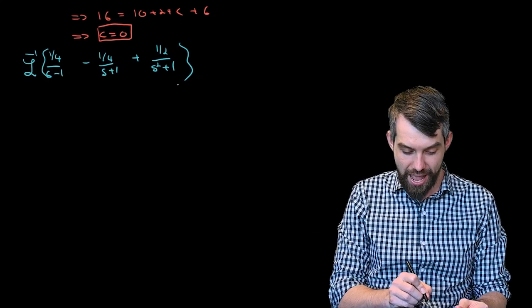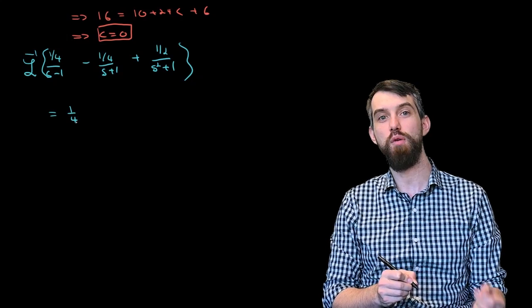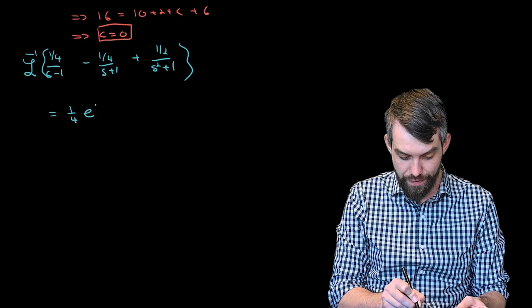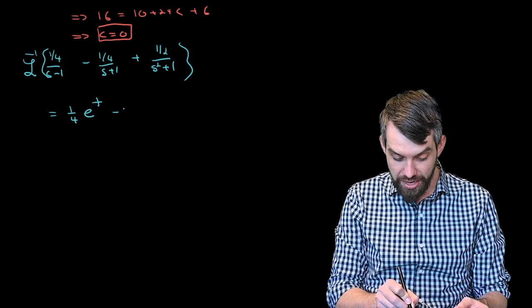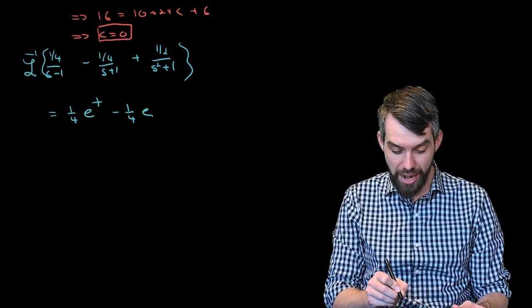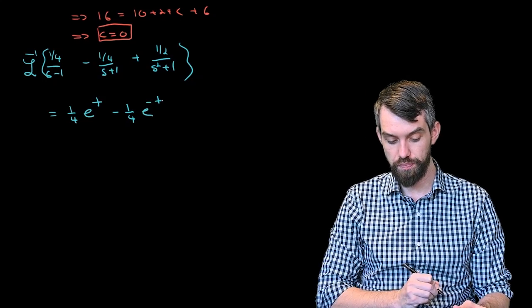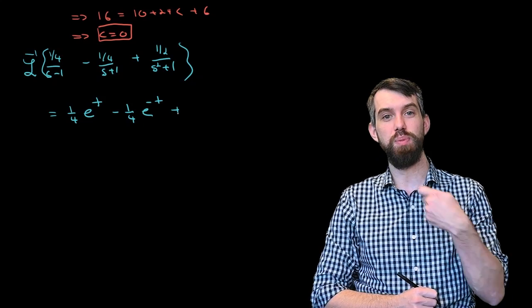One quarter over s minus one, well the one quarter comes out the front, and the inverse Laplace transform of one over s minus a is just e to the value of a, so in this case e to the t. Then I have a minus one quarter term and now if I want to write it as one over s minus a, the a now is minus one, so it's an e to the minus t term.